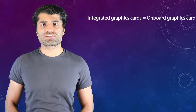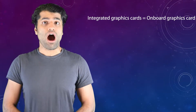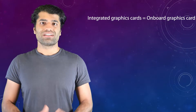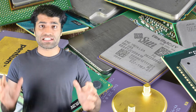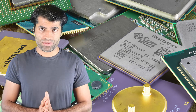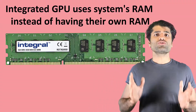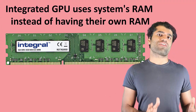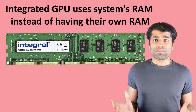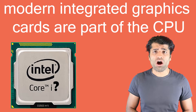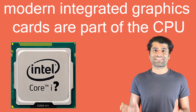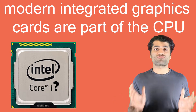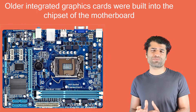Integrated graphics cards are also known as onboard graphics cards. Integrated graphics cards use the same resources as your CPU — for example, they will use your system's RAM instead of having their own RAM. The modern integrated graphics cards are part of the CPU and are more powerful than the older versions, which were built into the chipset of the motherboard.